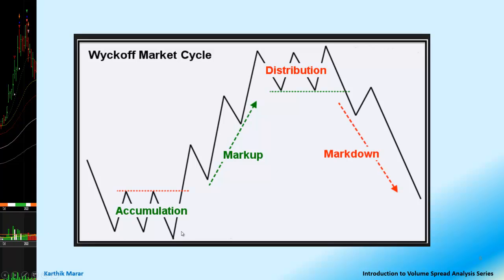As you can see, there is an accumulation part, and once accumulation is done, there is a markup. Then there is a distribution and a markdown, and this cycle repeats itself. The smart money accumulates the stock, then the prices are marked up. Once the prices are increased, there is a distribution where the smart money passes off the stock to the weak hands or the retail public. Once the complete distribution is done, there is a markdown phase where the prices come crashing down. The weak hands keep holding and exit when the prices come down a lot. The smart money has made a lot of money in this whole cycle.